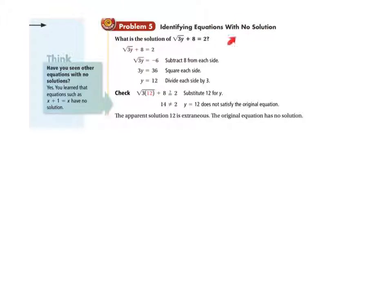Now, identifying equations with no solutions. We start out by subtracting 8 from both sides, so the square root of 3y equals negative 6. Square both sides: 3y equals 36, y equals 12 — sounds good. Check your work. Plug that 12 back in: square root of 36 plus 8 equals 2. That's 6 plus 8, which is 14, and 14 does not equal 2. So nothing works for this — no solution. Don't just tell me no solution; you better check it and show that to me. And double-check for math errors when you get this no-solution idea, because sometimes it comes back to get you.